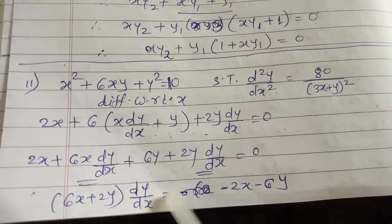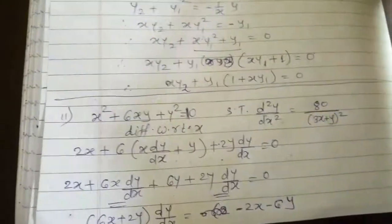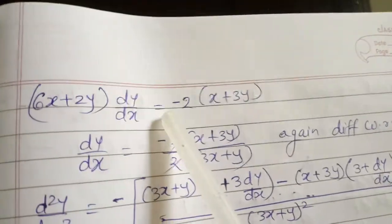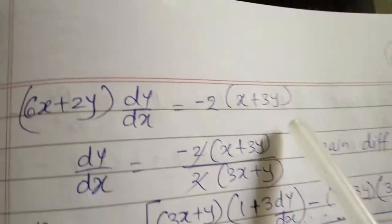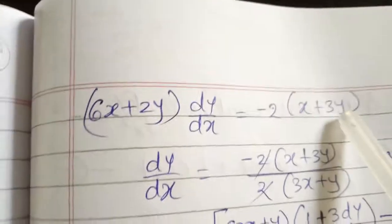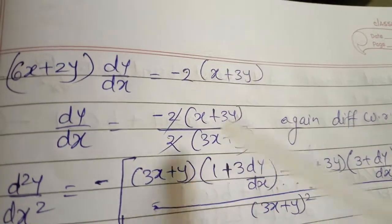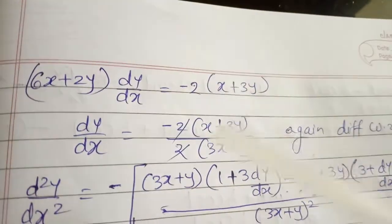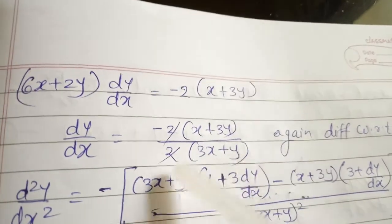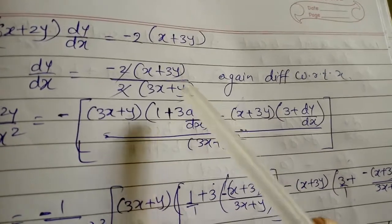Taking dy/dx common from the dy/dx terms: (6x + 2y)·dy/dx = -2x - 6y. Factoring: 2(3x + y)·dy/dx = -2(x + 3y). So dy/dx = -(x + 3y)/(3x + y).